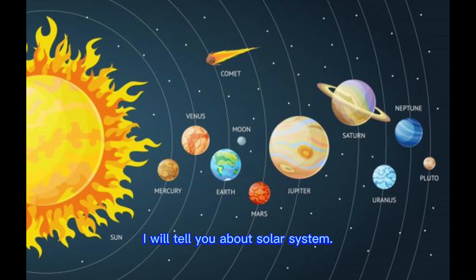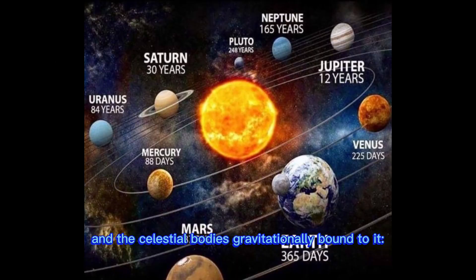Hello, today I will tell you about solar system. The solar system is a cosmic arrangement comprising the sun and the celestial bodies